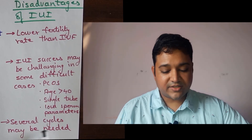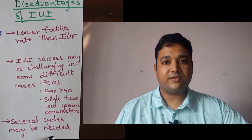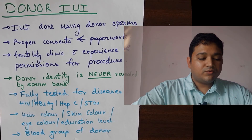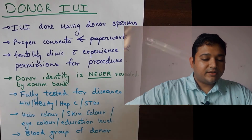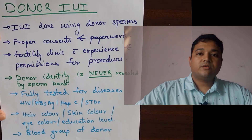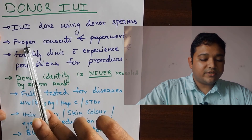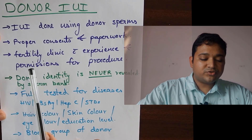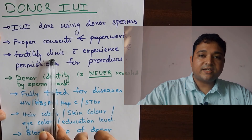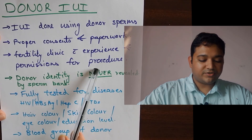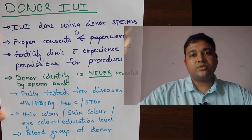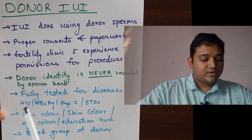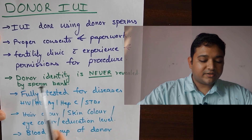Another issue with IUI is that several cycles may be necessary in some cases. Now we come to the bonus topic: donor IUI and donor sperms. IUI done using donor sperms is called donor IUI. We recommend donor IUI only after proper consents, counseling, and paperwork, and it should be done in a clinic with great experience and the appropriate permissions. Donor sperms normally come from certified donor banks, also called ART banks. The donor's identity is never revealed by the sperm bank.